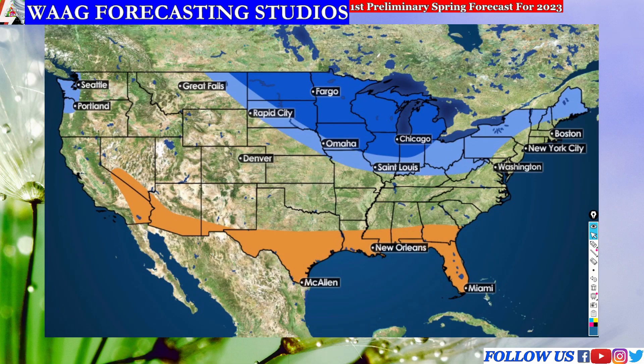On our first slide we're going to take a look at the temperature anomaly map. This is going to show you what kind of temperatures you're going to be dealing with this spring, whether that's going to be above or below average — ranging from slightly above to slightly below, or well above to well below average.